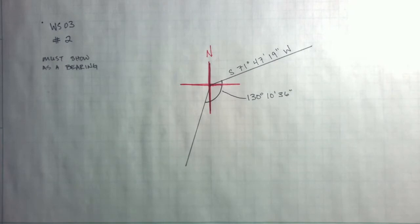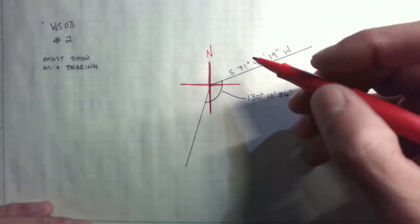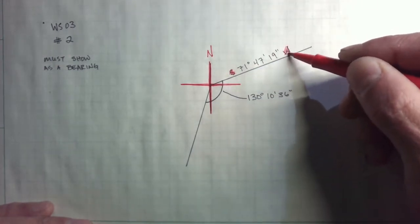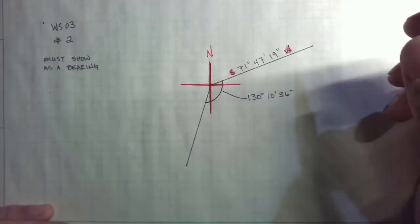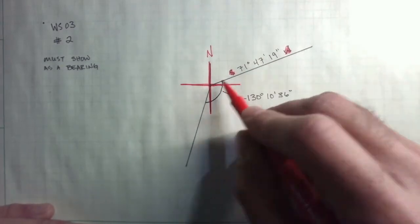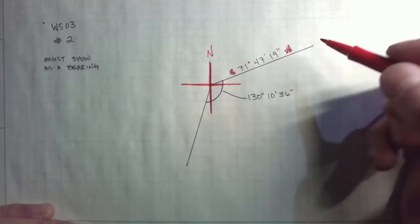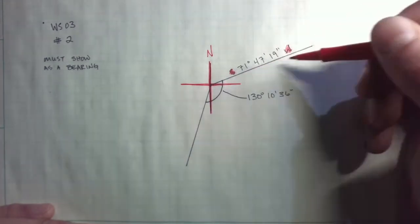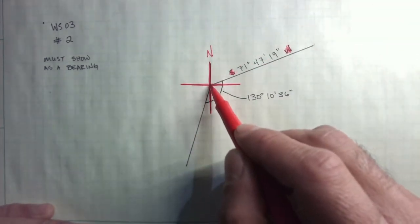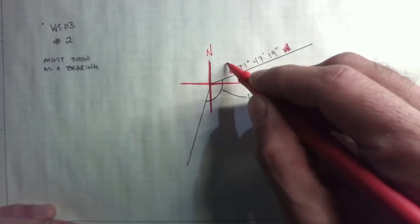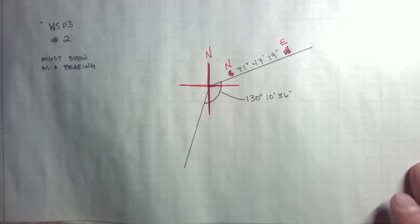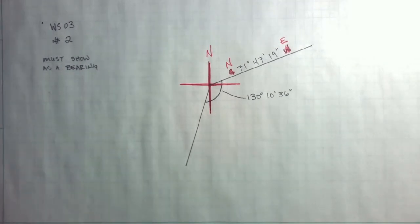So the first thing I want to do, or the second thing I want to do, is I'm going to reverse directions. So I'm not going to change the angle of the line. I'm just going to change the direction I'm facing on the line. So southwest would work if I was standing here, looking southwesterly along that line. But I'm standing here, looking northeasterly along that line.